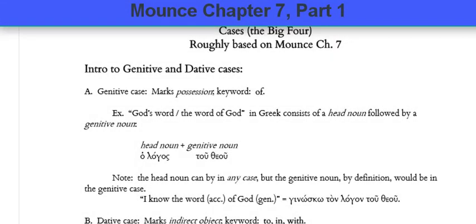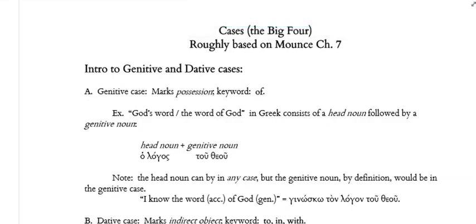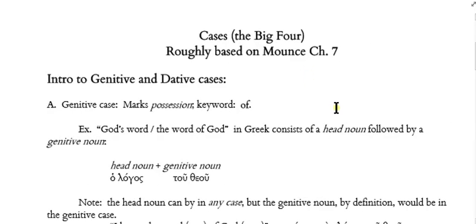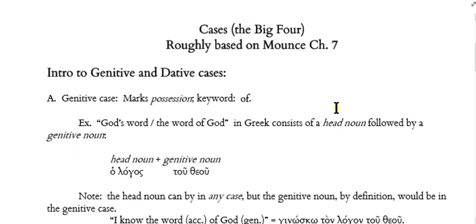On this handout we're going to handle the chapter 7 material, or at least get through part of it. I want to introduce the genitive and dative cases. You guys are all now experts in the nominative and accusative cases — you know them like the back of your hand. So let's talk about the genitive case first, and then we'll look at the dative.